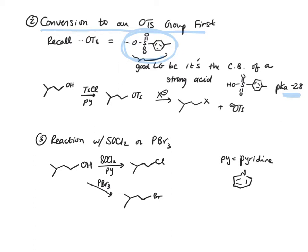Recall that we install the tosyl group by treating our alcohol with tosyl chloride and pyridine, and then we want to use the nucleophile to displace that tosylate. So now we've got our good leaving group, and whatever our incoming nucleophile was, it's now here.